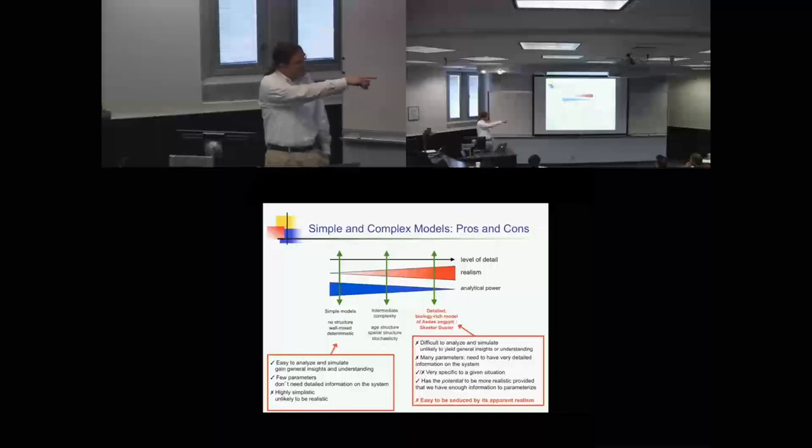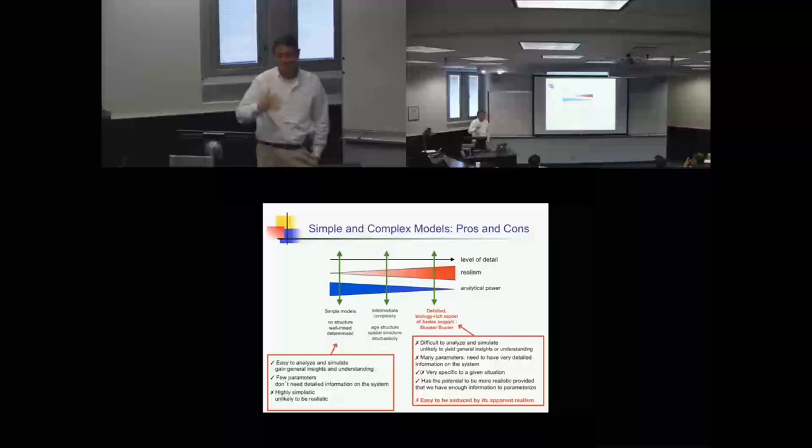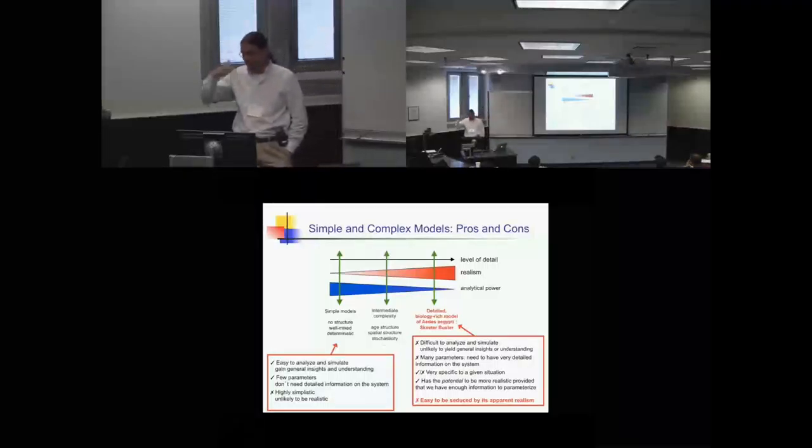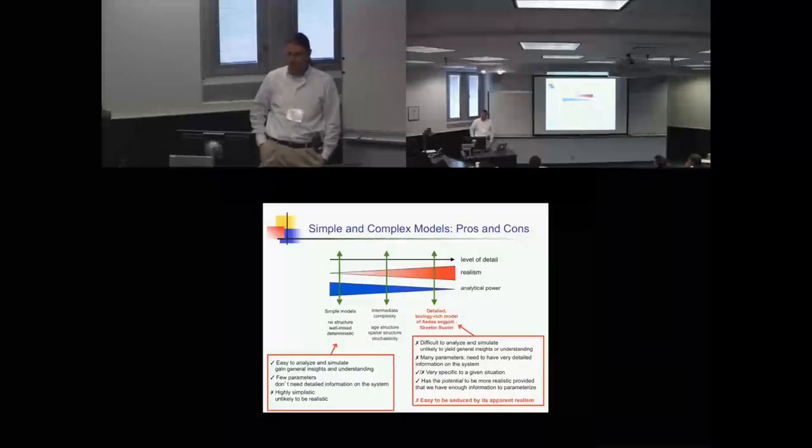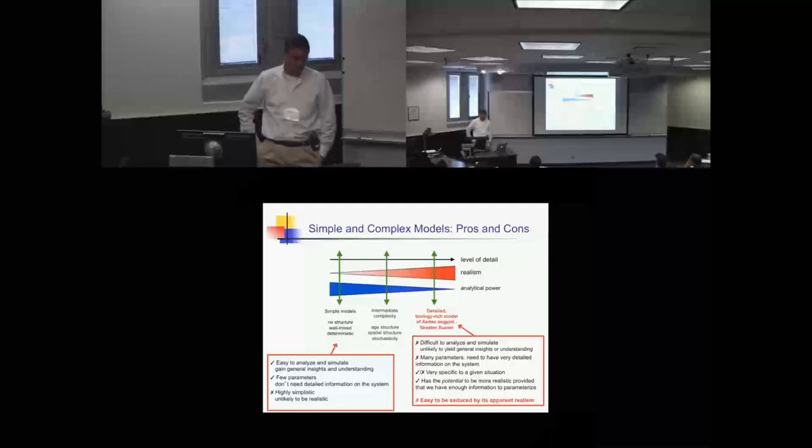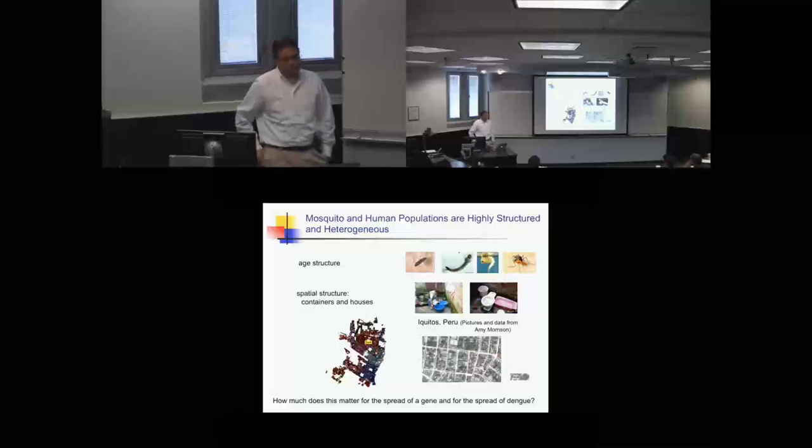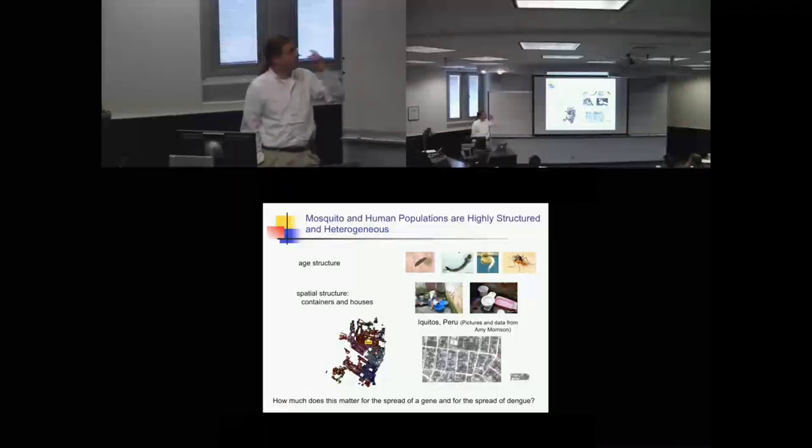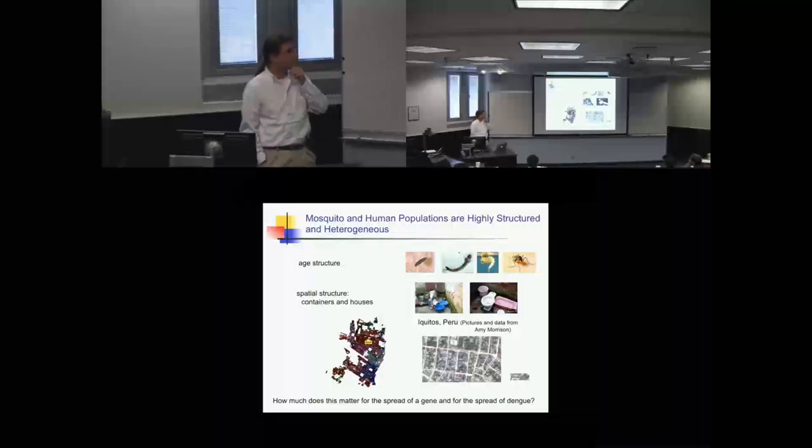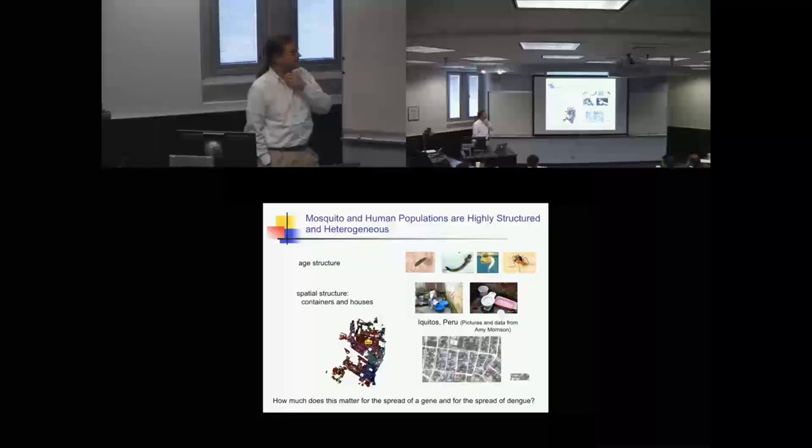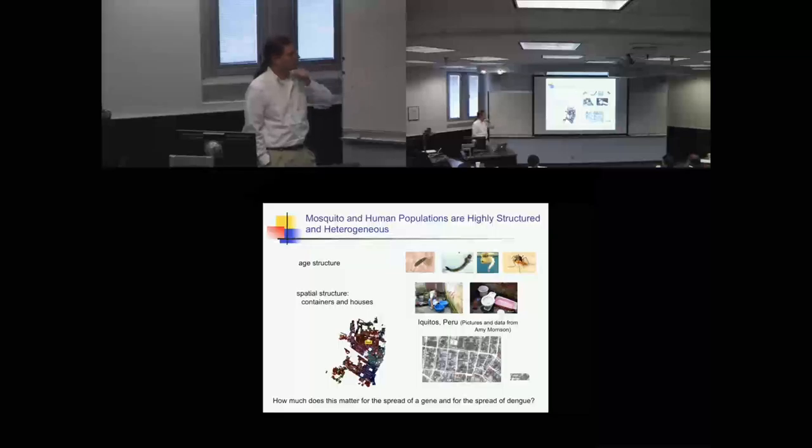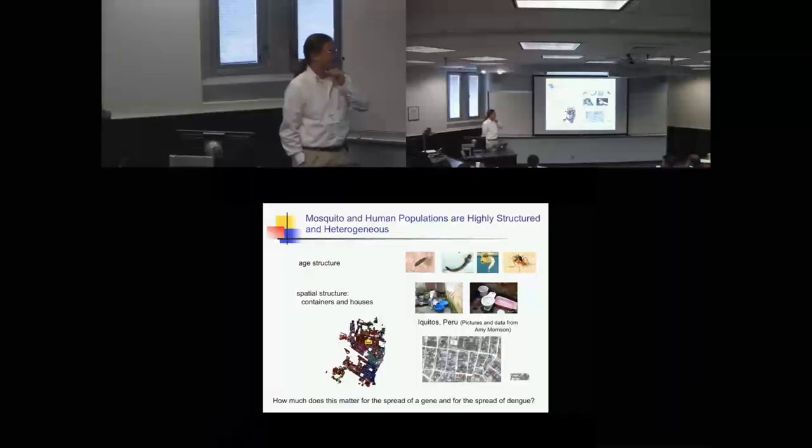My favorite line is about the very detailed model: it's very easy to be seduced by its apparent realism. You've got this detailed model that in theory has all this biology there, but still there's all these assumptions, particularly when it comes to parameters. It's very rare that we know all the biology. Why do I worry about this? Mosquito and human populations are highly structured and heterogeneous. Mosquitoes have a complicated age structure with immature classes and adults that can fly around. People move around a city as well, and that's really quite important.